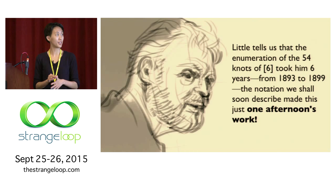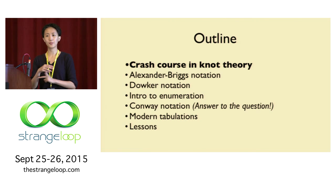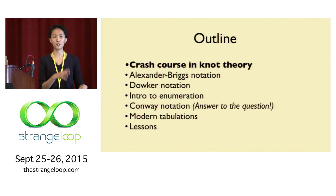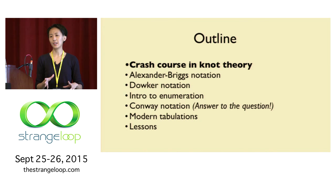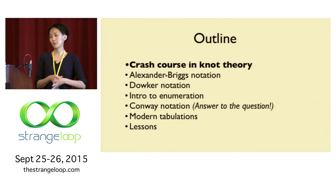The notation we shall soon describe made this just one afternoon's work. How did he do this? Here's how we're going to get there: we'll start with a crash course in knot theory, then talk about Alexander Briggs notation — a simple but bad notation — go into Dowker notation which augments it, talk about enumeration briefly, and then answer the question by going through Conway notation and modern tabulations. The question to keep in mind: which of these notations do modern knot theorists actually use? And finally, lessons that may or may not be related to programming languages.